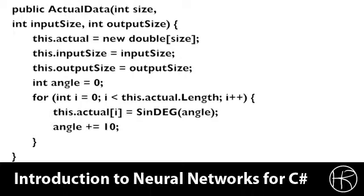We then record the input and output size, this is for later, when we want to actually generate them, and then we create a starting angle which is zero. Then we're going to loop over the entire length of the data that we specified for the actual data, and we're going to calculate the sine using degrees, and we're going to calculate this at 10 degree intervals. This gives us a complete set of actual data for the size that we specified.